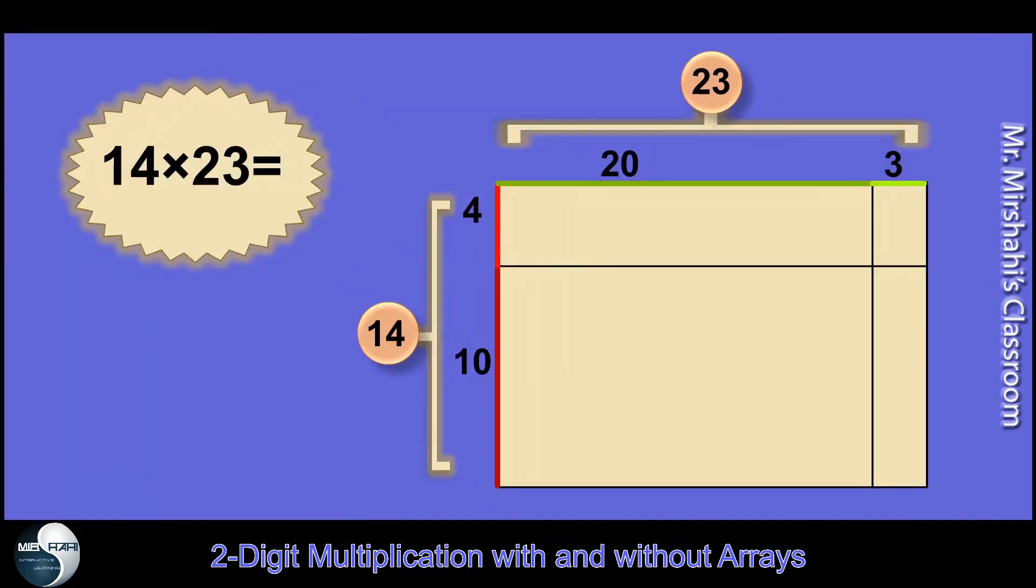Our next example, 14 times 23. So here I have 14, I split it into 10 and 4. 10 plus 4 is 14. 23. I have 20 and 3. It's easy. 23. You split the ones from the tens. Now basically all you're doing is drawing two lines, and these are imaginary lines. You just label so you know.